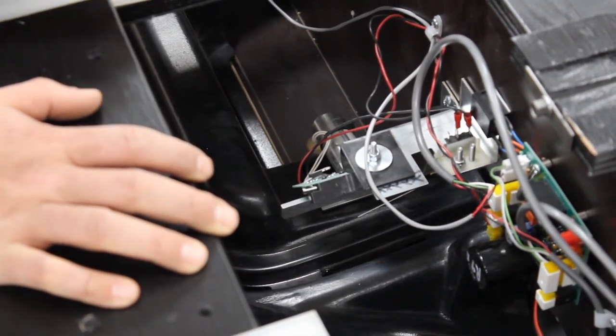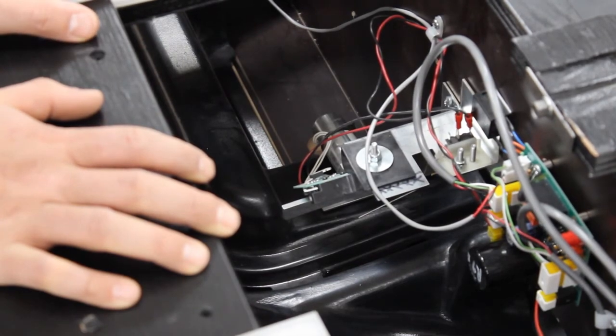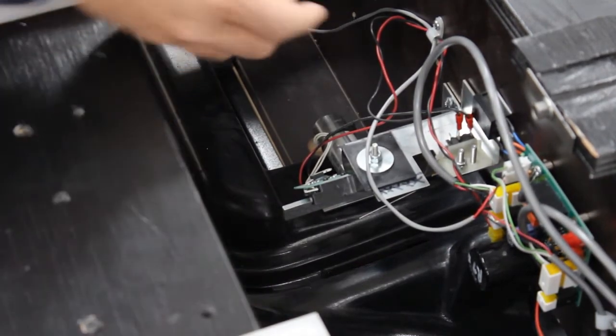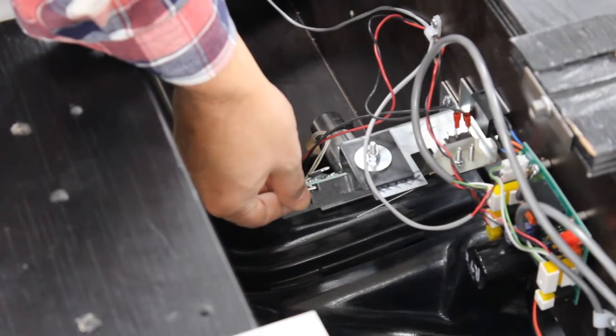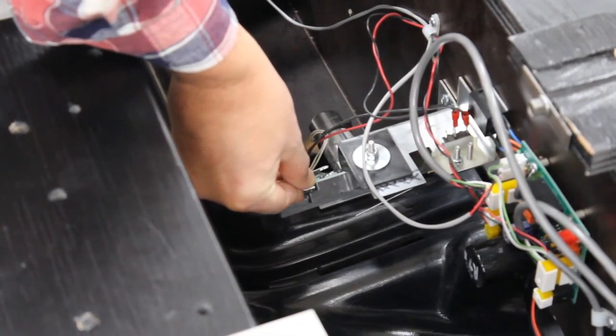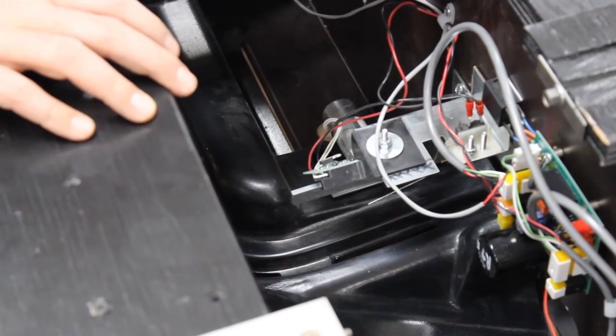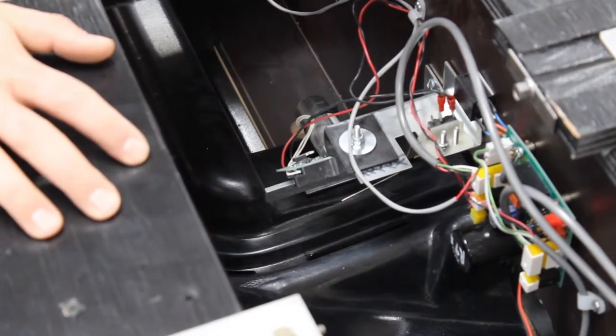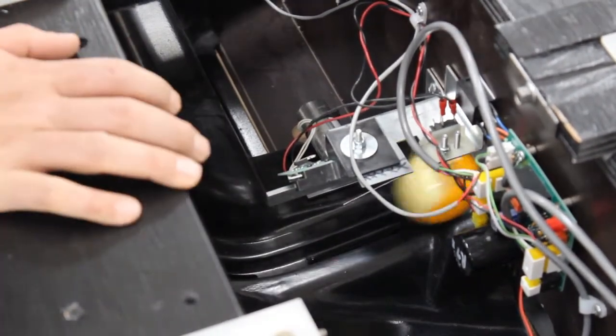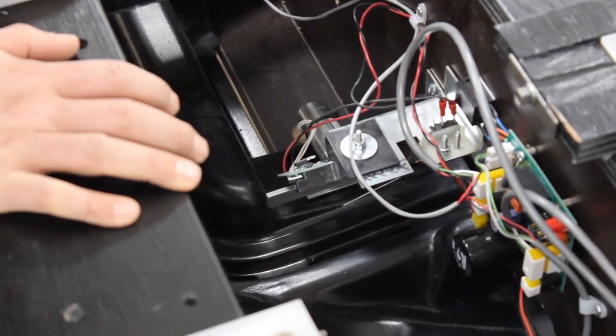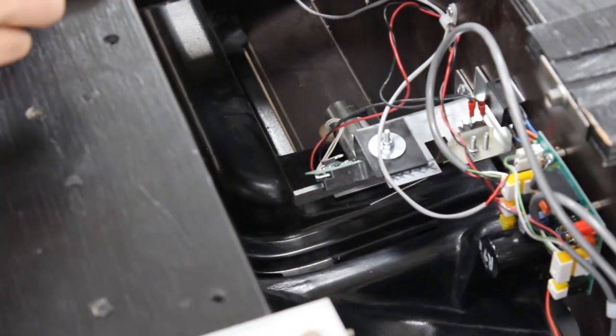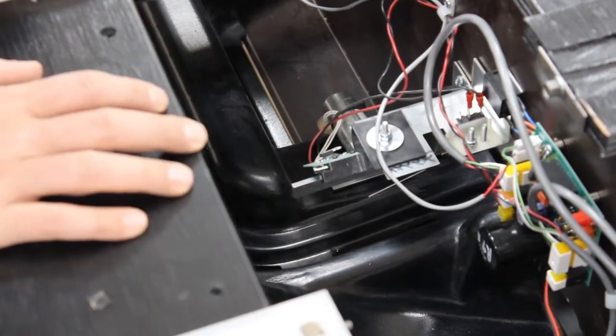If one of the object balls were to be separated, then you would take the dial and work it the other way. Just a small incremental turn, and then run the object balls through again. Keep making those adjustments until it just separates the cue ball and not the object balls.